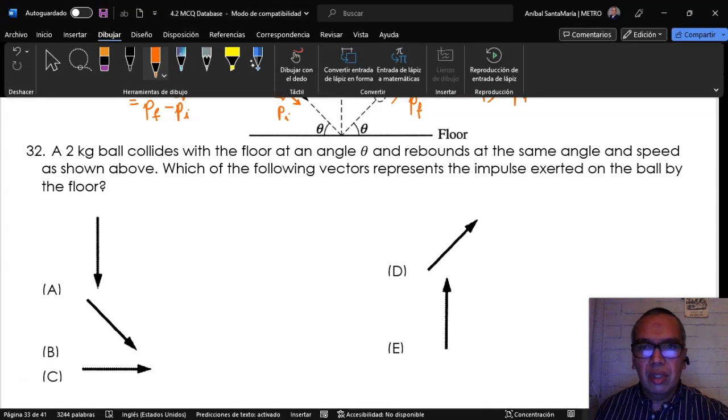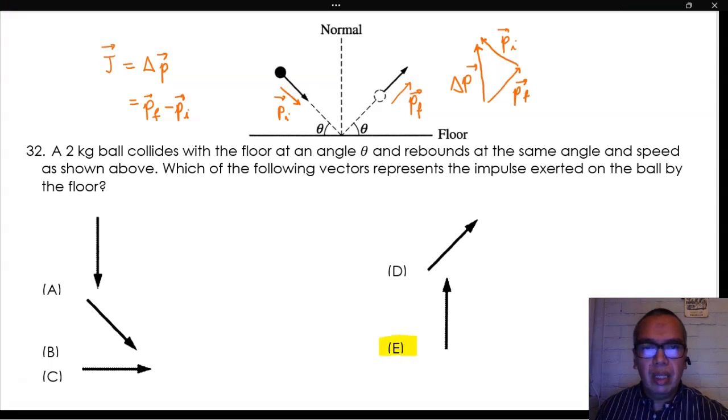That is the vertical upward vector shown here. Therefore, the correct answer is option E.